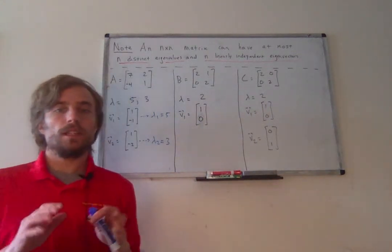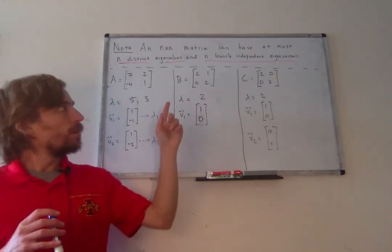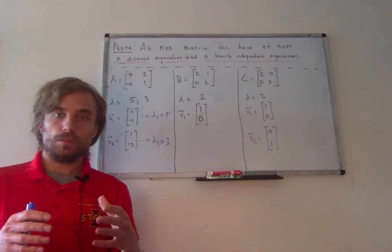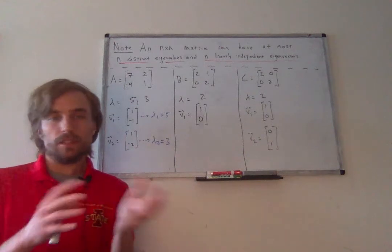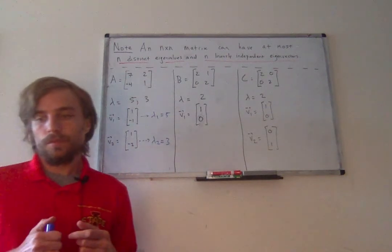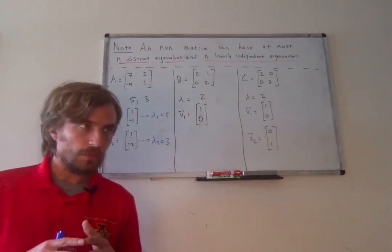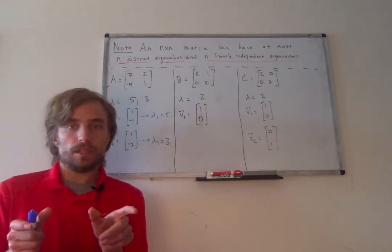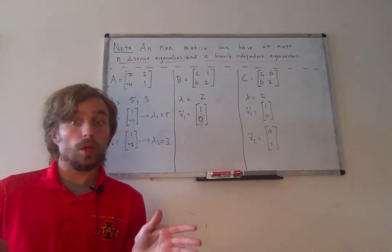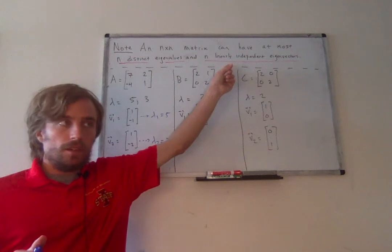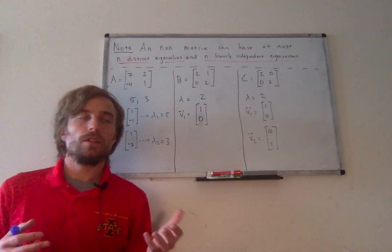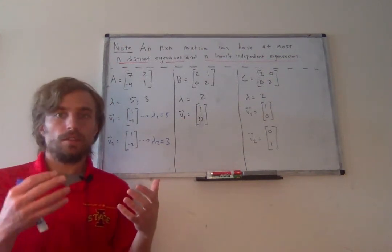A quick explanation as to why that's the case. Every distinct eigenvalue corresponding to a matrix must have at least one eigenvector associated with it. One eigenvalue could have multiple eigenvectors, but each eigenvalue has at least one. In section 5.1 we showed that two eigenvectors corresponding to two distinct eigenvalues are always linearly independent. So if each eigenvector is of length n and I had more than n linearly independent eigenvectors, that would contradict everything we've learned about R^n and bases.